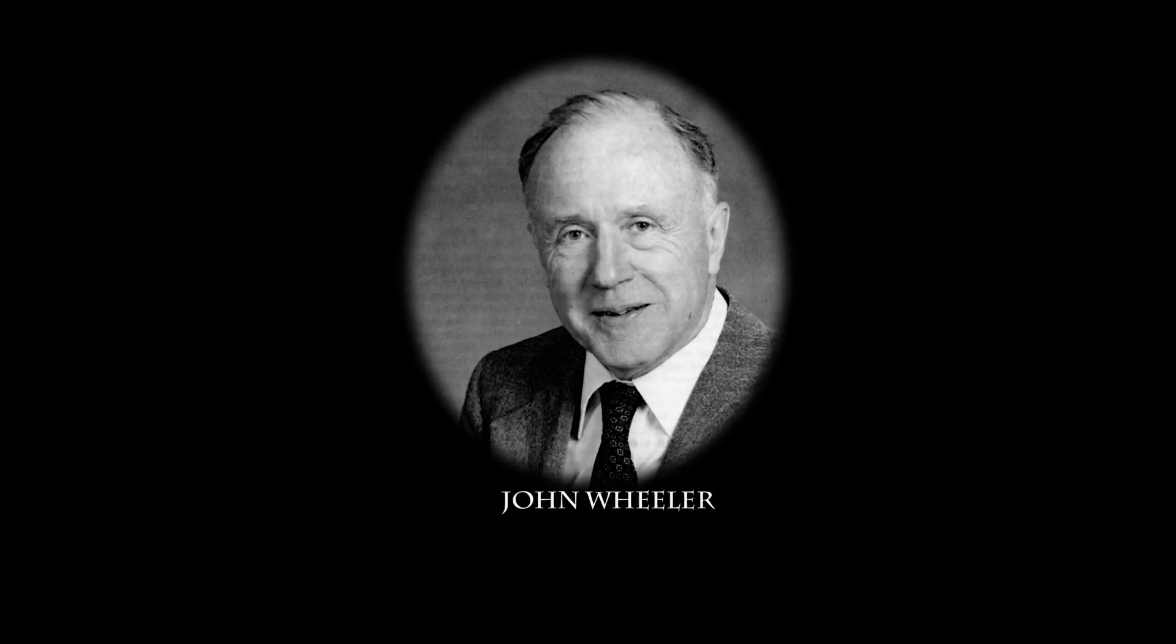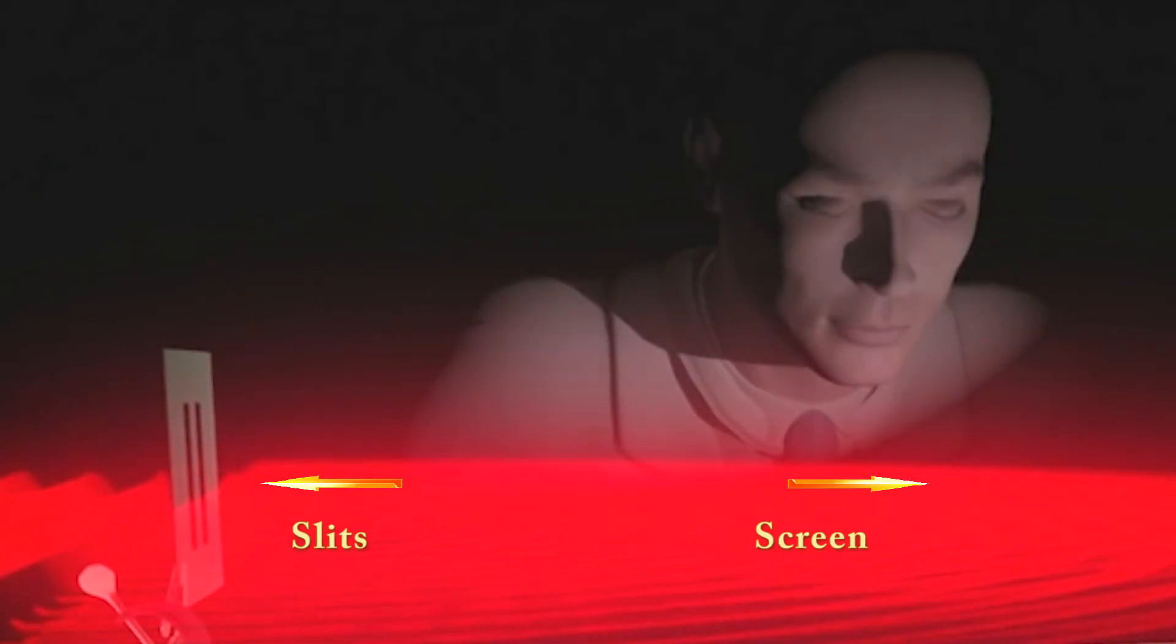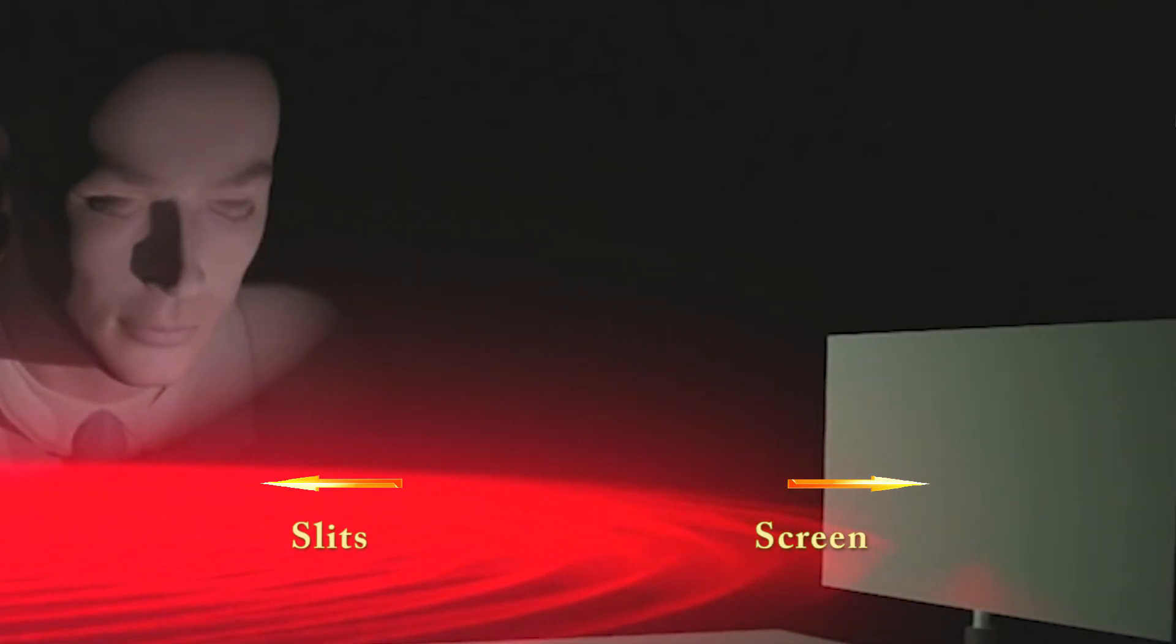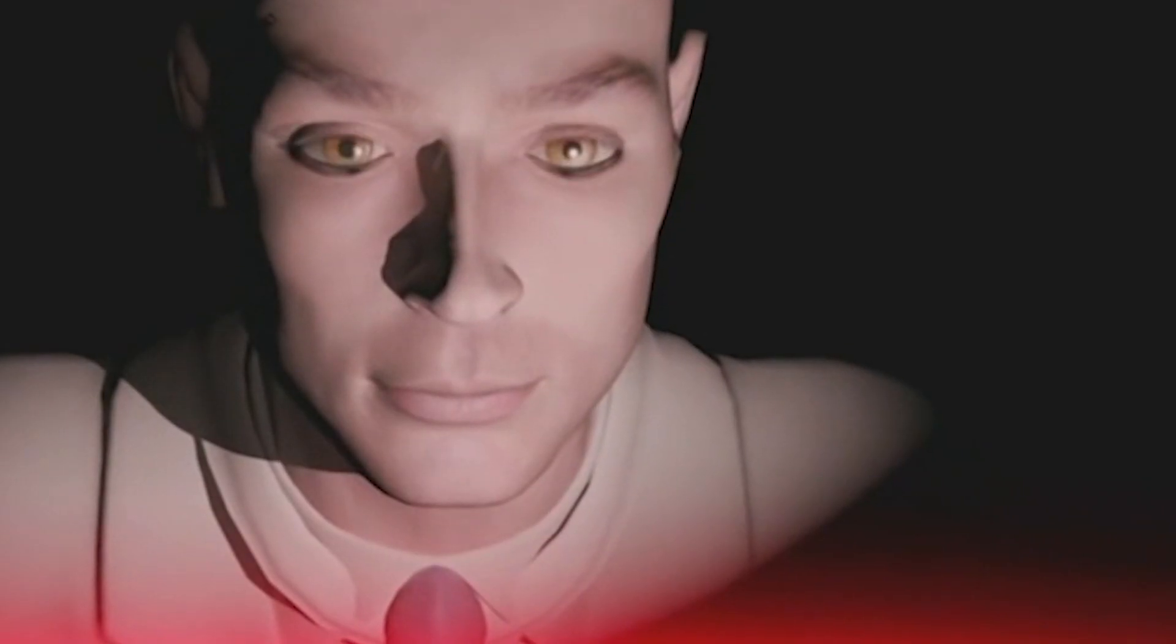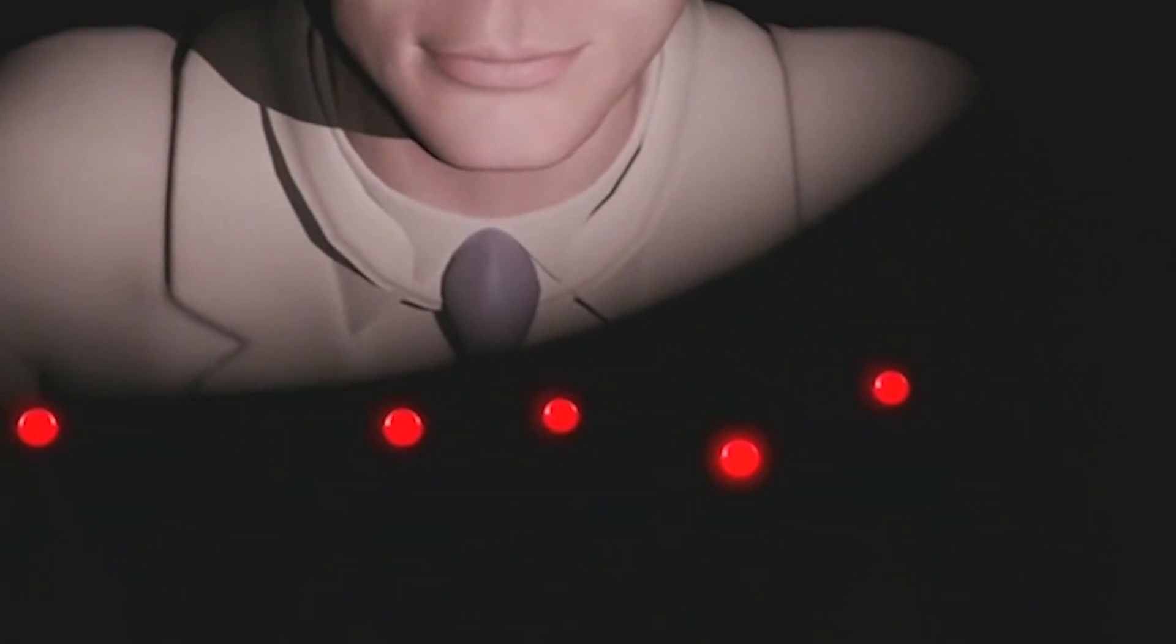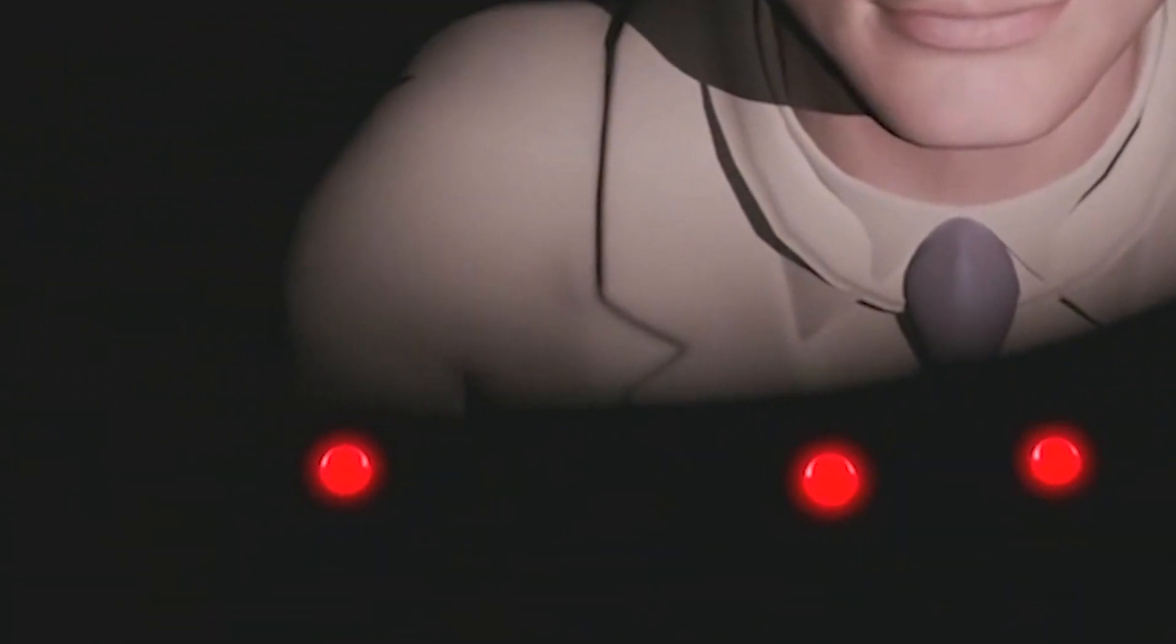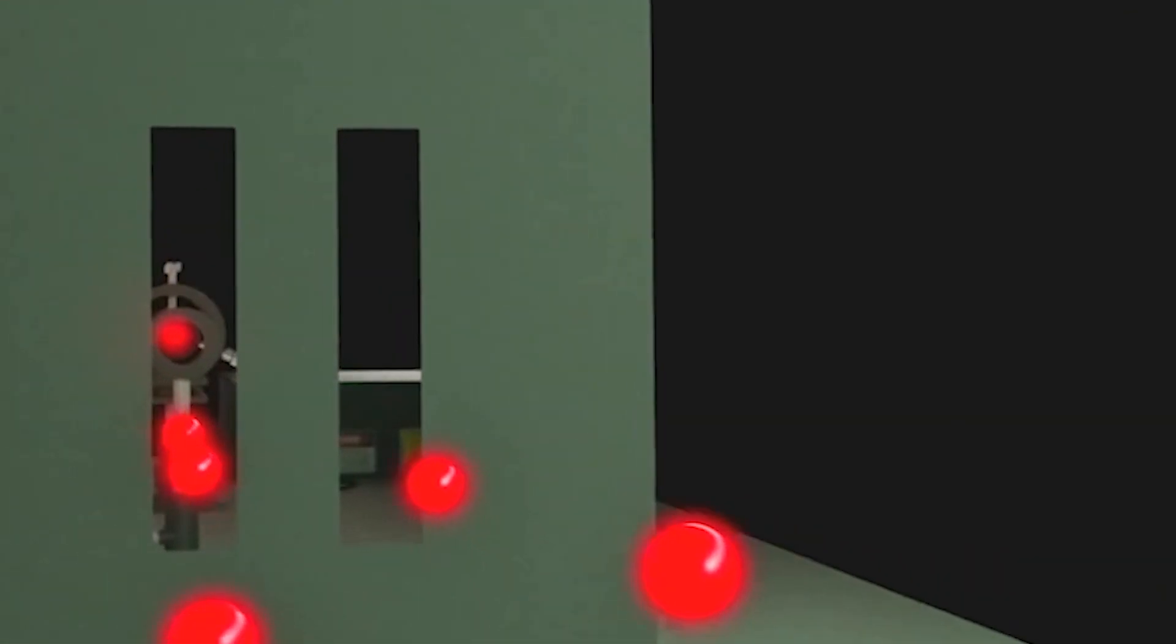He imagined a system that allowed these particles to be observed, always in wave form, just before they reached the screen. To his surprise, he saw that when observed, these waves transformed into particles as soon as they passed through the slits, which means before observation in the past. In other words, observation influenced the past of these quantum objects.